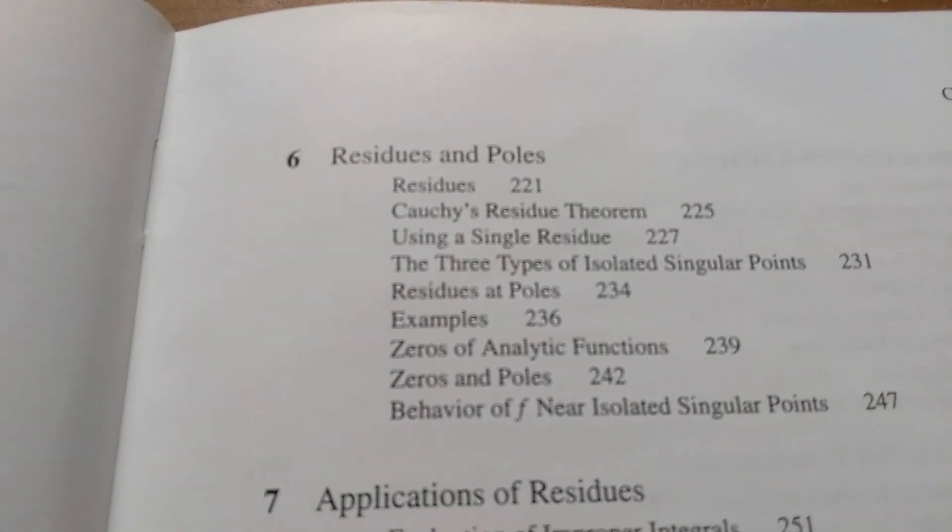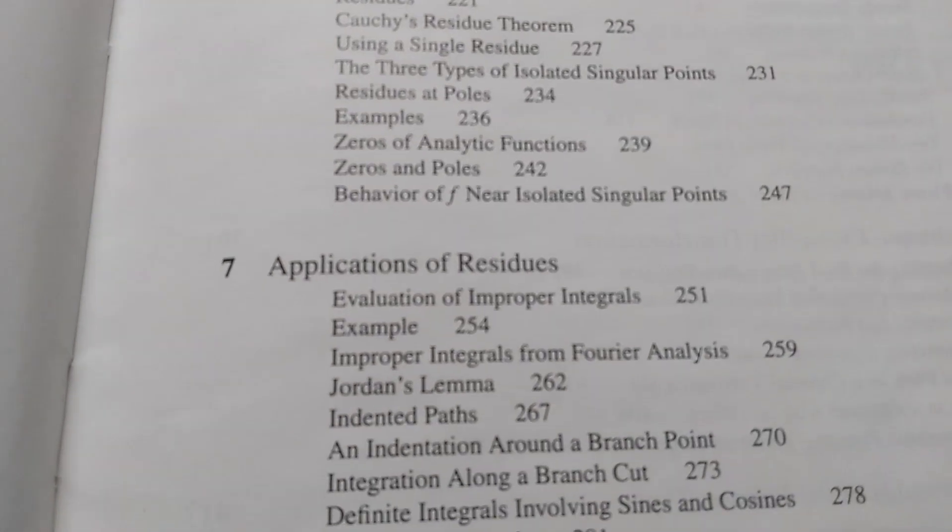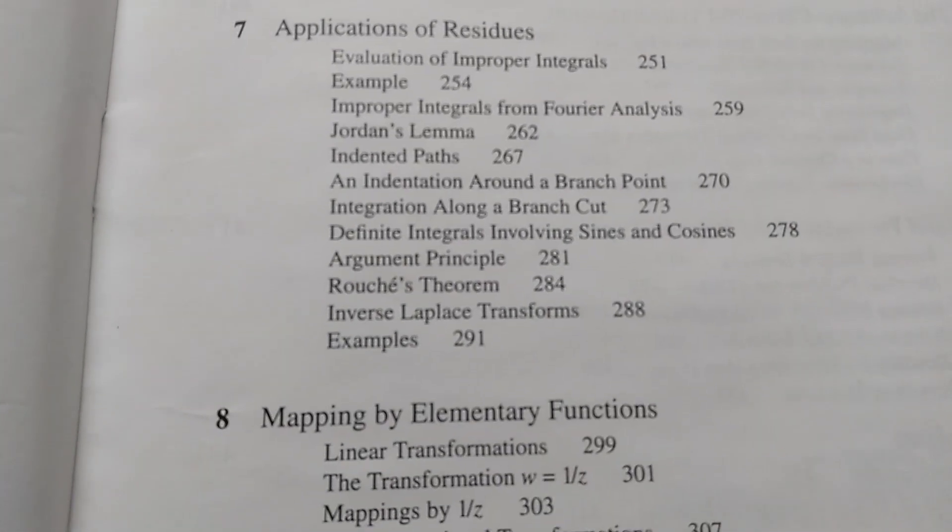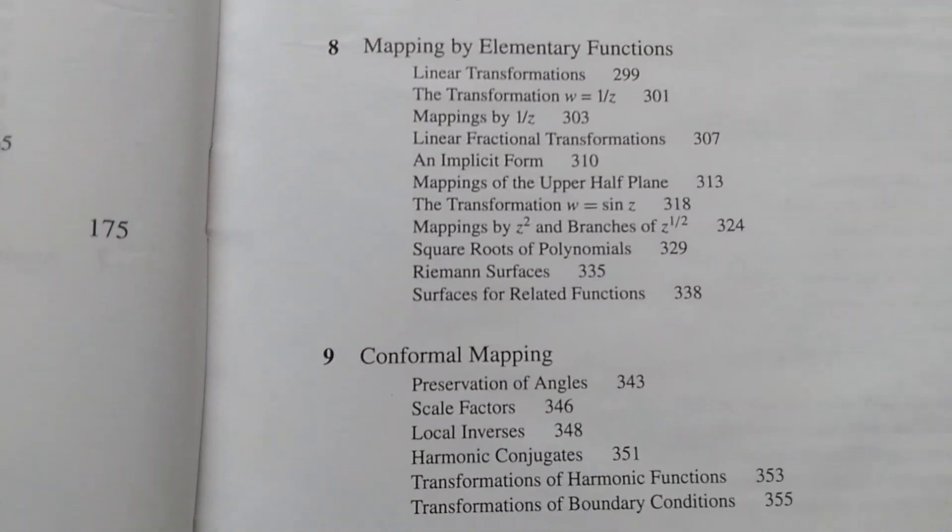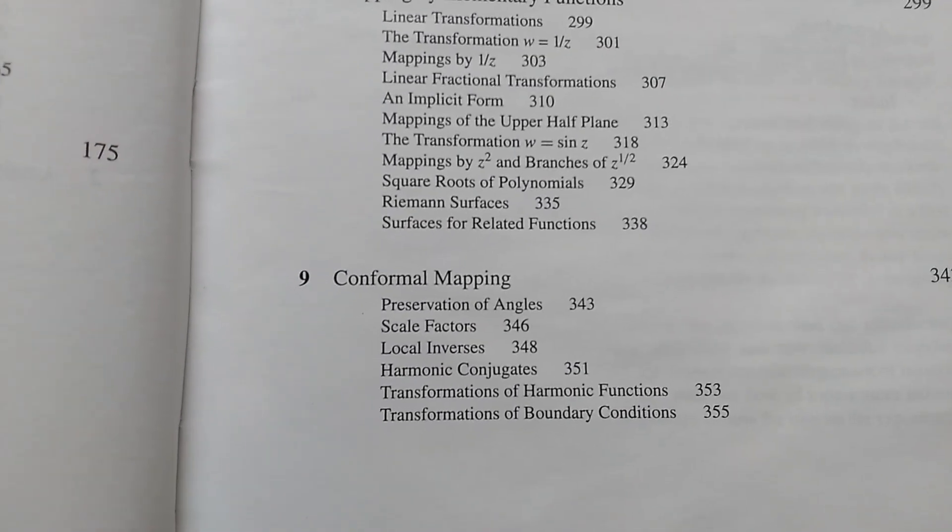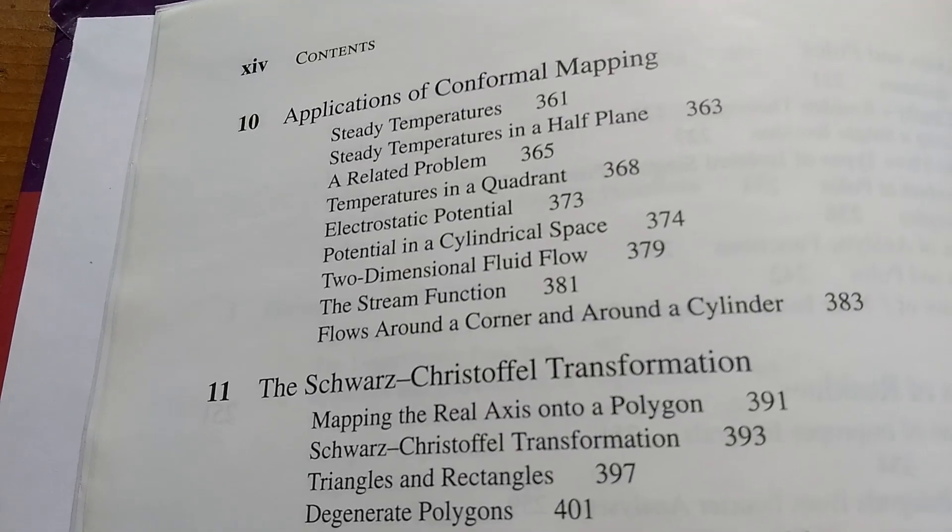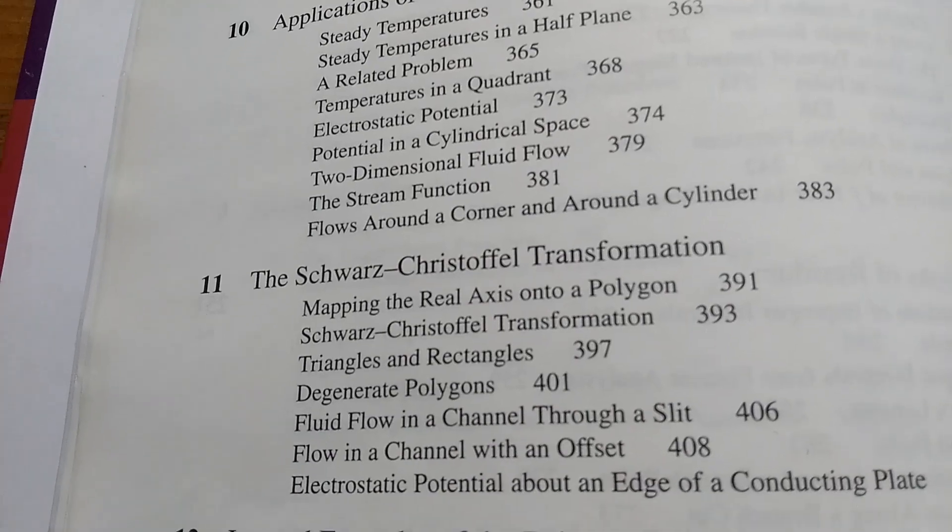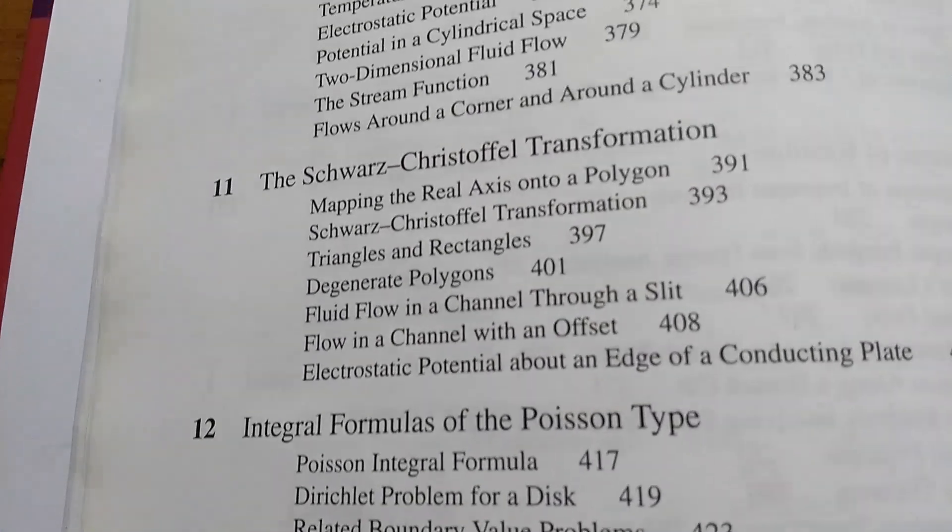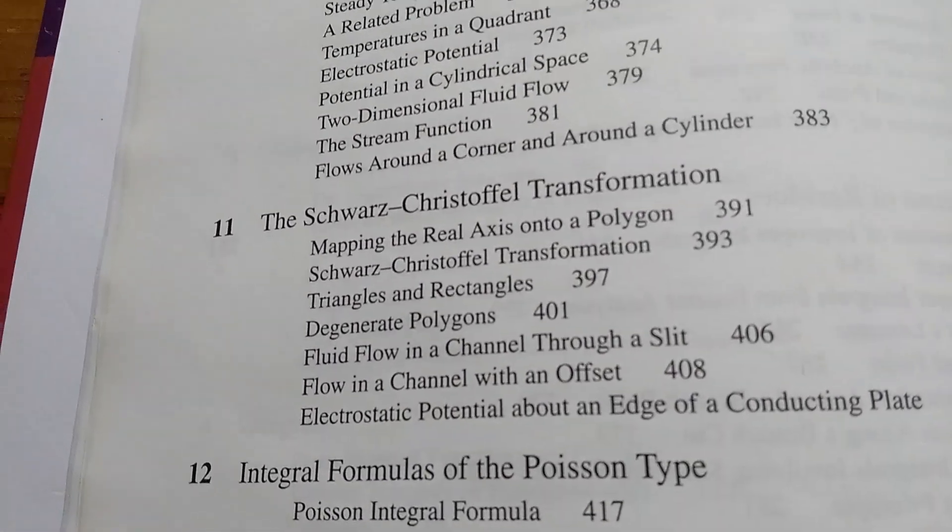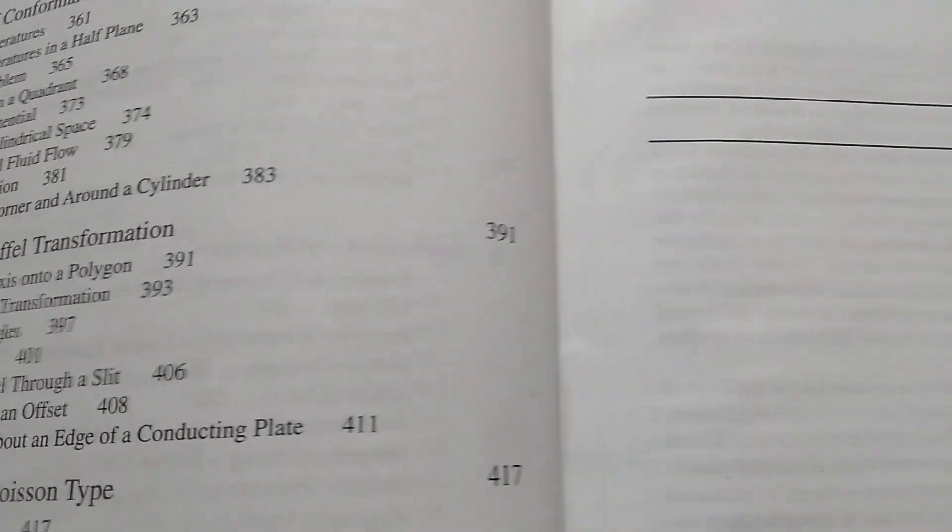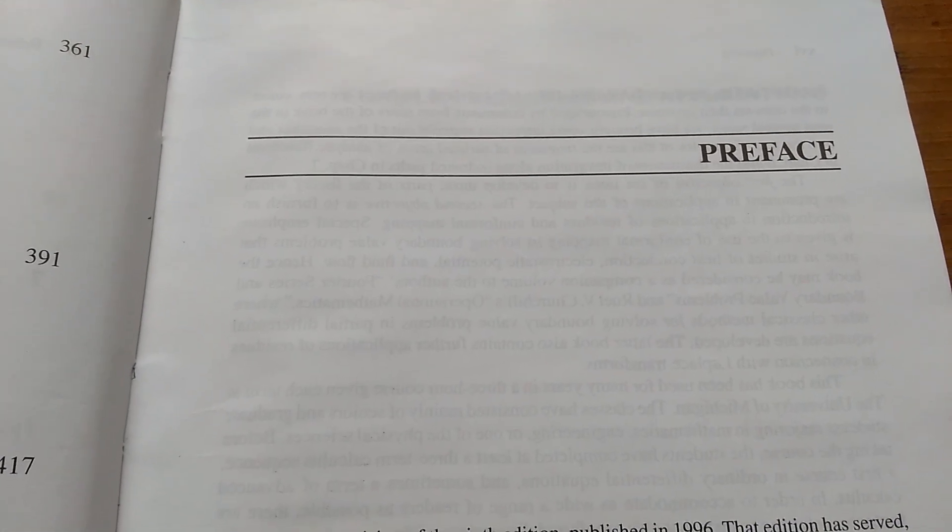Then it talks about residues and poles, applications of residues, mapping by elementary functions, conformal mapping, applications of conformal mapping, and then some other things here. I have not looked at these last three chapters. I've only read the first few chapters, and I've done several problems from this book. Let's take a look further inside this book.